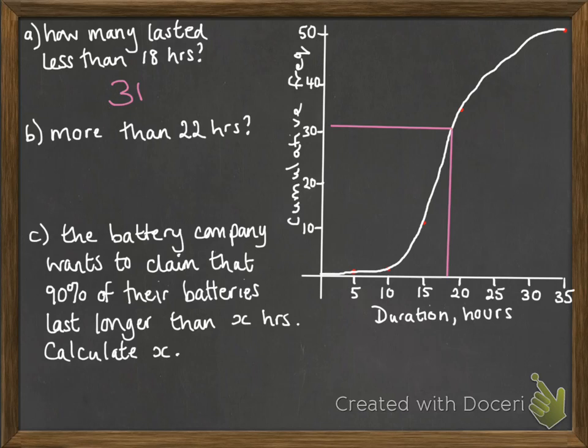More than 22 hours — you have to be a little bit careful with this one because it's a 'more than' question and our numbers tell us the total up to that point. So we have to do a subtraction from 50. If we go to the 22-hour mark, we see that 40 lasted up to 22 hours. So for 'more than', we take that away from our total of 50 and get 10.